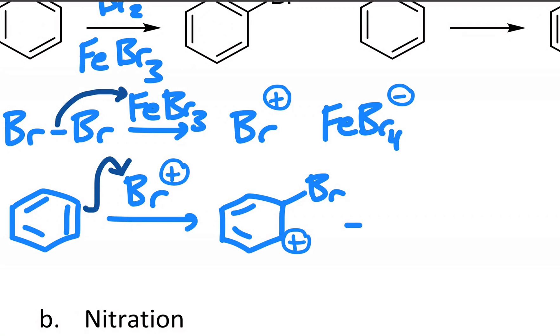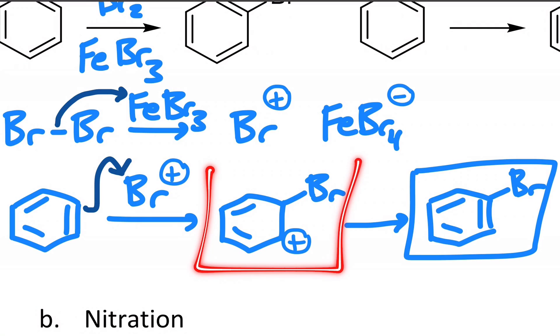So to do that, we reform the aromatic ring and put that pi bond right back where it was. If you look at what changed from this intermediate, it means we had to lose a hydrogen. The hydrogen that we lost is the one directly attached to the carbon with the bromine on it.